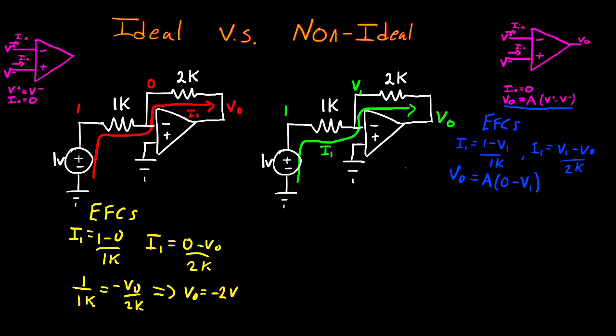So what I'm going to do now is equate my two I1 equations together so I can solve for V1 in terms of VO. So we have 1 minus V1 divided by 1K is equal to V1 minus VO divided by 2K. And this comes out to V1 is equal to 2 plus VO divided by 3. And now that I have a definition of V1, I can plug that in to this equation up here. So plugging that in, we get VO is equal to negative A times 2 plus VO divided by 3. And we can clean this up a little bit.